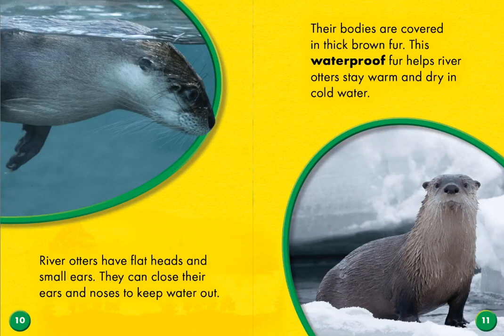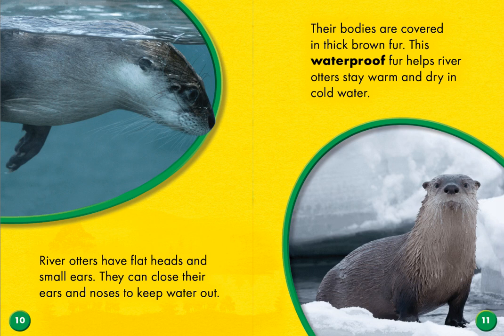River otters have flat heads and small ears. They can close their ears and noses to keep water out. So it sounds like otters have a similar adaptation to beavers where they are able to plug up their ears and noses to keep the water out. Their bodies are covered with thick brown fur. This waterproof fur helps river otters stay warm and dry in cold water. Waterproof means that the water can't get through it.